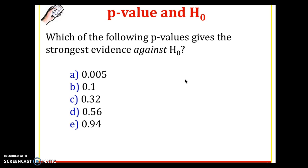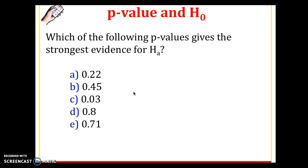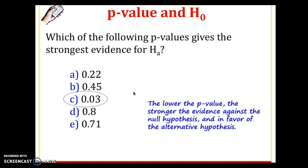Which of the following p-values gives the strongest evidence against the null hypothesis? That would be the smallest p-value: 0.005. Keep in mind, a p-value is a probability, so it's always going to be between 0 and 1. The one closest to 0 is the strongest evidence against the null. Which of the following p-values gives the strongest evidence for the alternative hypothesis? It's going to be the same idea — the smallest value. In this case, it's 0.03, or 3%. The lower the p-value, the stronger the evidence against the null, which is the same as the strongest evidence in favor of the alternative.